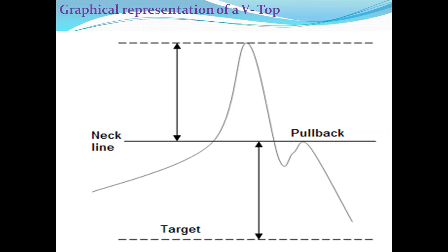As you can see from the diagram, support has become resistance and the price has gone downwards after coming to the new resistance. For your target, you can take the same target from here — you draw a line, so the target should be the same distance. Once you break the support, you take from the inverted V top to the neckline, and that is the target.